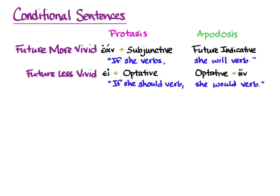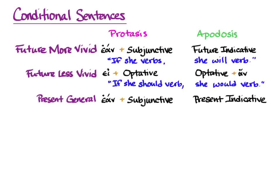Our next pattern is Present General, and that tells you what always happens if the if-clause is true. In this, we get a protasis with ἐάν plus a subjunctive, and an apodosis with the present indicative. The default translation is: 'if she verbs, she verbs.'